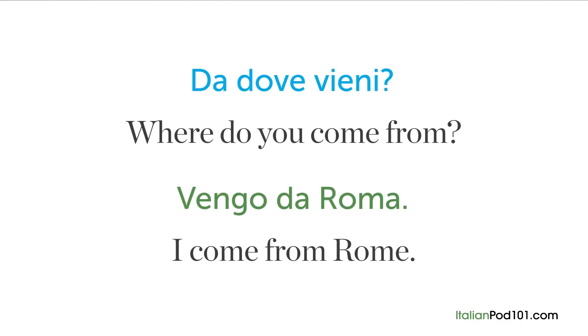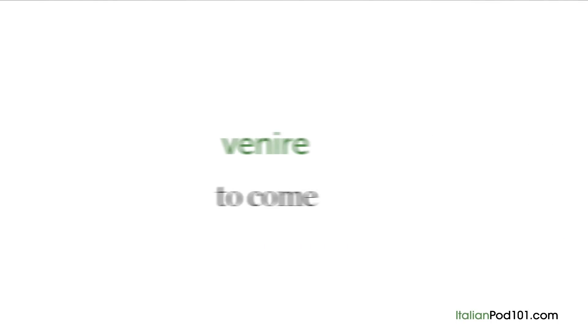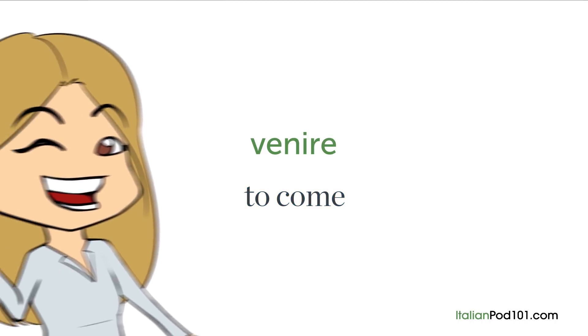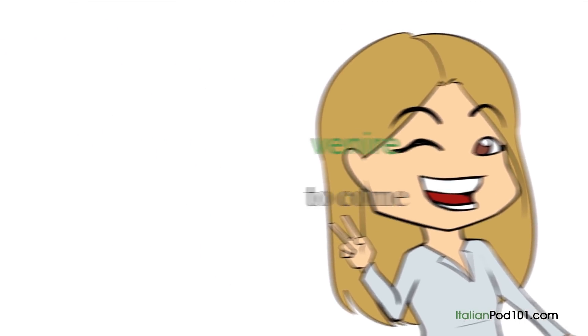DA indicates movement from somewhere. So: DA DOVE VIENI? — 'Where do you come from?' — Vengo da Roma. — 'I come from Rome.' This is because the verb venire, 'to come,' is a verb of movement.